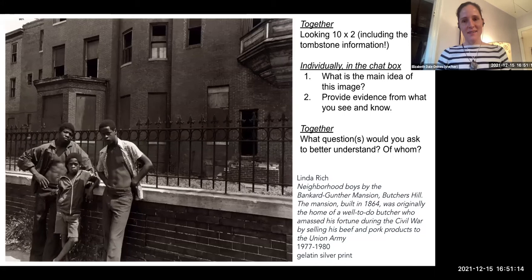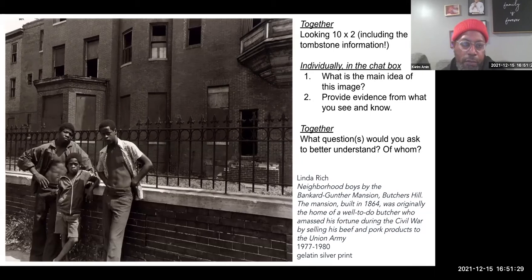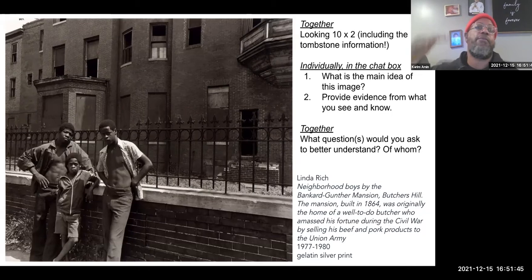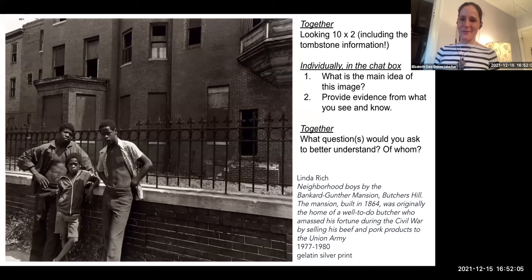Kareem, what question would you ask and who would you ask it of? I would say, where are these young men now? Are they still around? What are they doing? Are they still living in those neighborhoods? Butcher's Hill was an expensive neighborhood that kind of went down a bit, as you can see around the early eighties with urban renewal, and now it's an expensive neighborhood again — gentrified, ungentrified, and gentrified again. So I'm wondering if those young men still live in that neighborhood — they won't be young men anymore, but if they're still in the neighborhood, what are they doing? That personal history part seems really important.